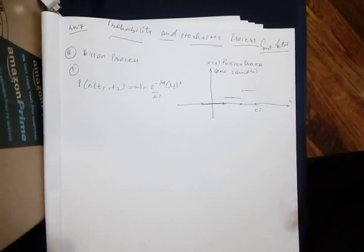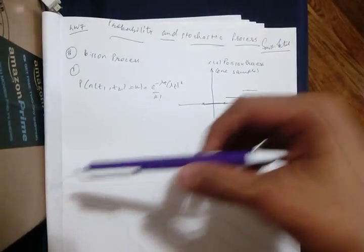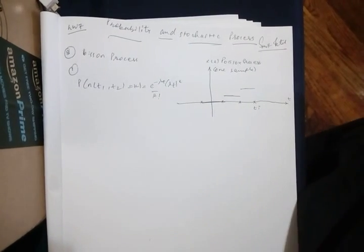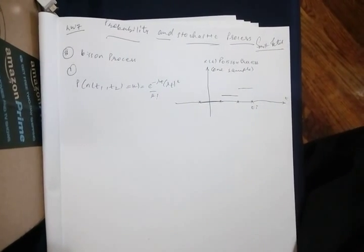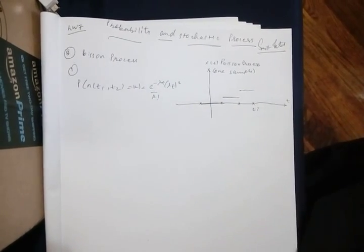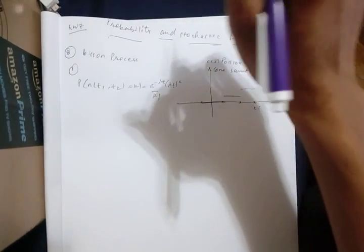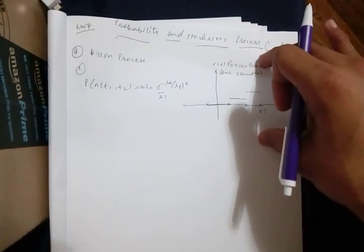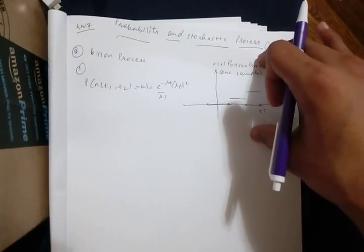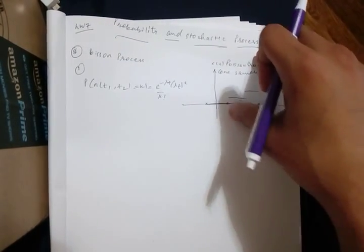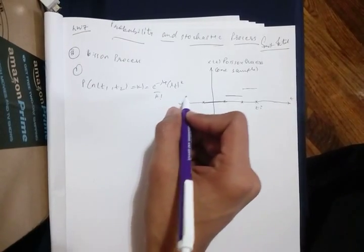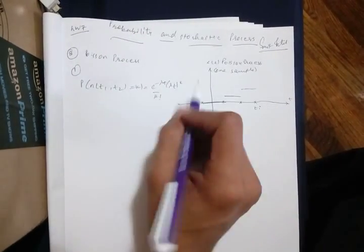This is Probability and Stochastic Processes. My name is Smith and I'm going to do homework seven, question eight. We are given the basic definition of a Poisson process — the Poisson process distribution is given with this formula.